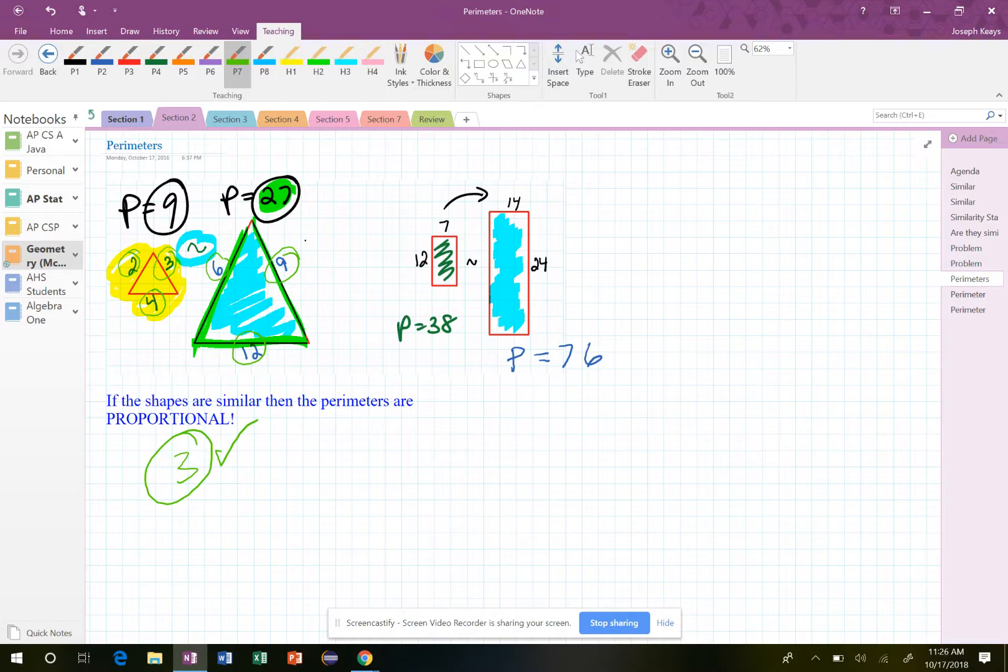Well, the analysis of the perimeters, that's the whole point here, is if the scale factor is going to be 3, then their perimeters are also going to have a scale factor of 3 as well.